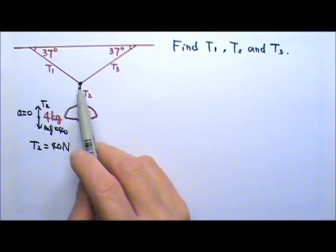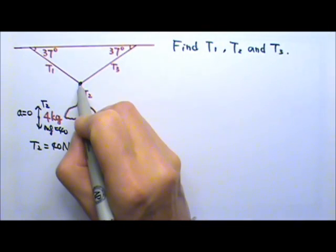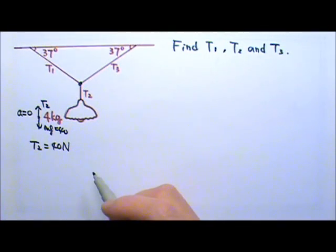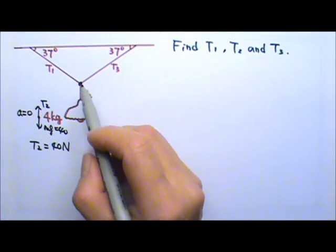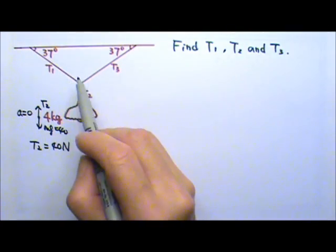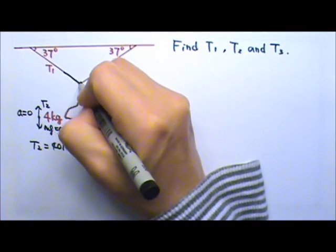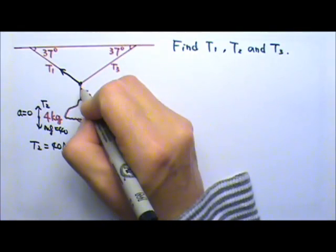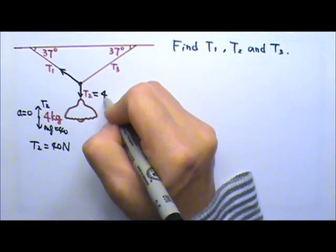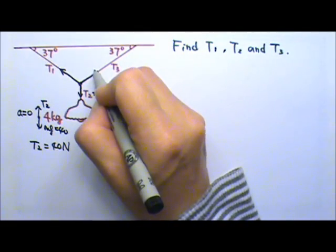T1 and T3 are both touching it. The junction point has no mass, therefore there is no mg for the junction point. The junction point is touching the 3 cables, so we have T1, T2 going down, and we know T2 is 40 newtons, and we have T3.